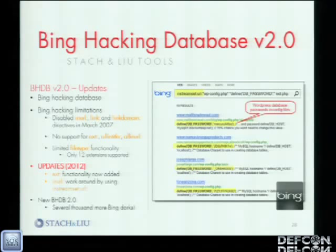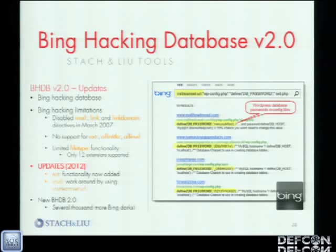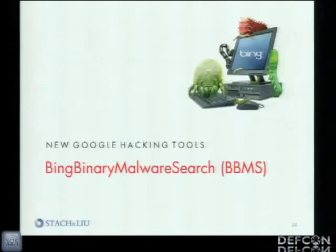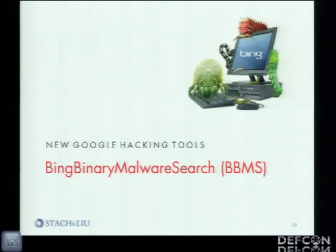Using instream:set:url — just a footnote in their documentation that we came across — we can revive Bing hacking and make it as viable as Google hacking. In this screenshot: instream:set:url WP-config in Bing returns results of people with their WordPress configurations with database passwords right there in the config file. This is a query we would not have been able to do with Bing before now. With the new version of Bing Diggity, we went from about a thousand mildly effective queries to four to five thousand queries that are now pulling vulnerability information out of Bing.